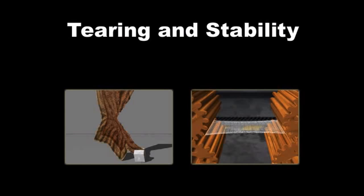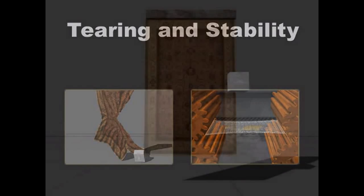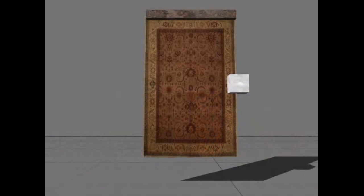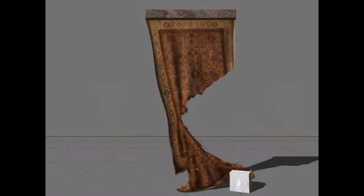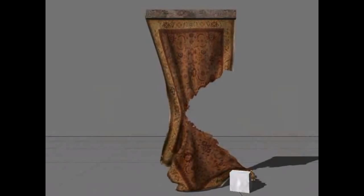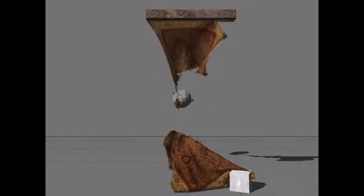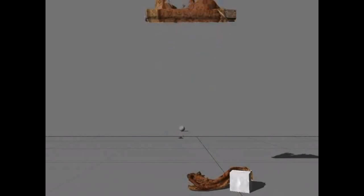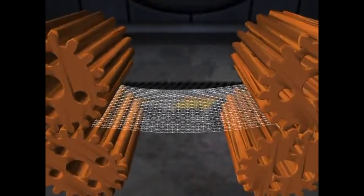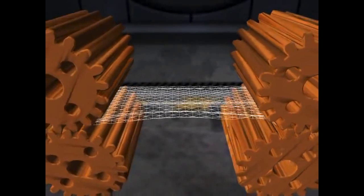You can also do tearing, which is relatively simple. Basically, if some of the springs — or they call them distance constraints here — if they are stretched too much, you just release them. That gives you a very nice tearing behavior.